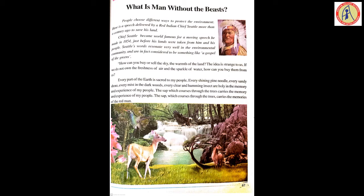The speech begins: 'How can you buy or sell the sky, the warmth of the land?' The idea is strange to us — if we do not own the freshness of air and the sparkle of water, how can you buy them from us? There is no opportunity for any person to own these things, because this wonderful nature is a gift given by God.